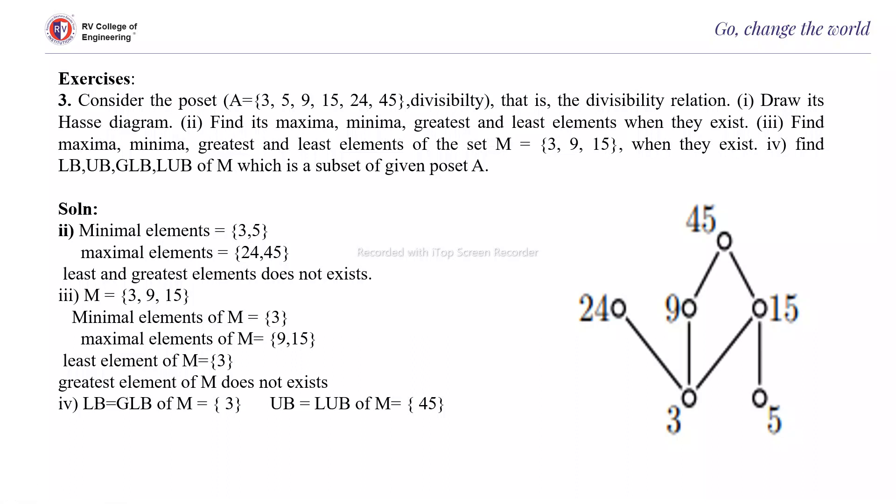And then for the subset M = {3, 9, 15}, find the maximum, minimum, least elements, the greatest and least elements of M = {3, 9, 15}. So 3, 9, and 15. Minimum among this, the least element of M is 3 and the greatest element for 3, 9, and 15...